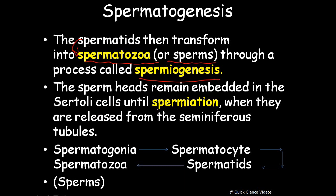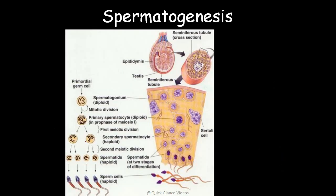During spermiogenesis, the sperm head remains embedded in the Sertoli cells, which provide nourishment until spermiation takes place — when the sperms are released from the seminiferous tubules. The complete process flows as: spermatogonia → spermatocyte → spermatids → sperm.